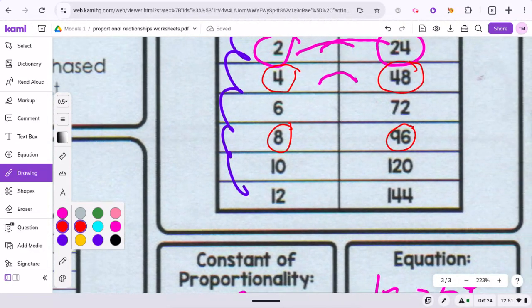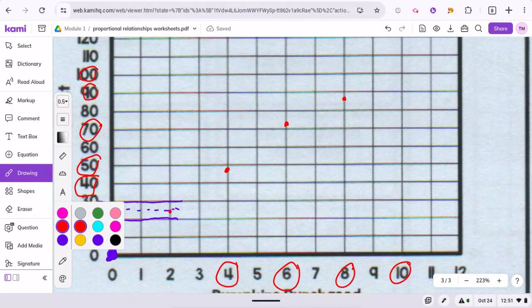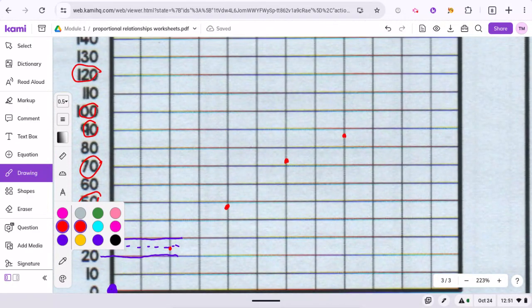And then we have 10 and 120. 10 and 120 already has a spot. So we would go right across from there. Down from the 10. Right here to that spot.